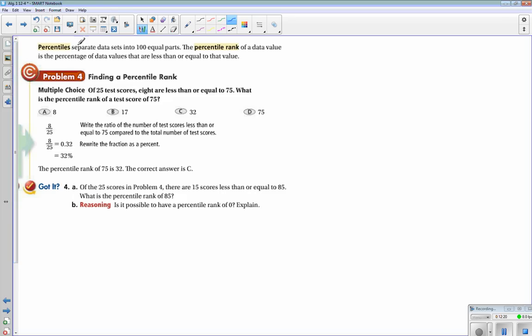Alright, lastly but not least, we're going to talk about percentiles. Percentiles separate data into 100 equal parts. Thank goodness, because I can deal with 100. The percentile rank of a data value is a percentage of data that are less than or equal to that value.